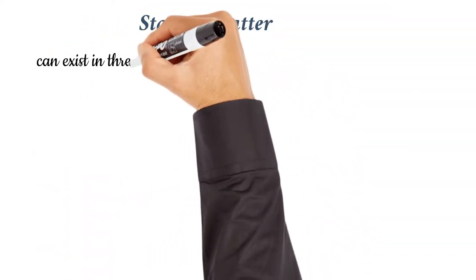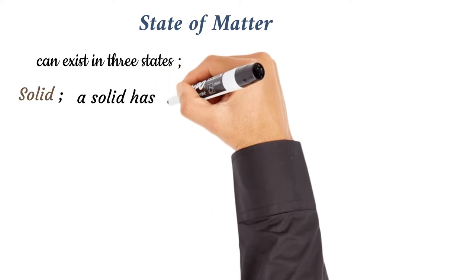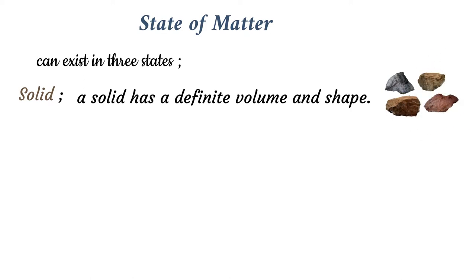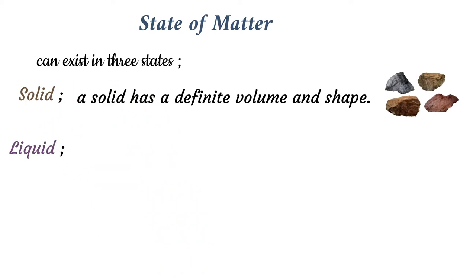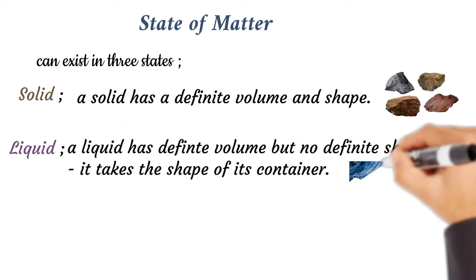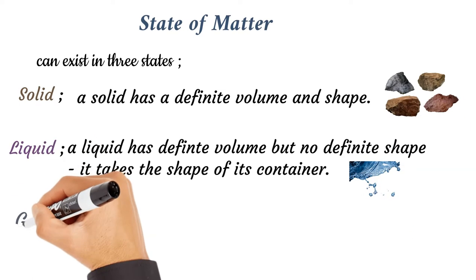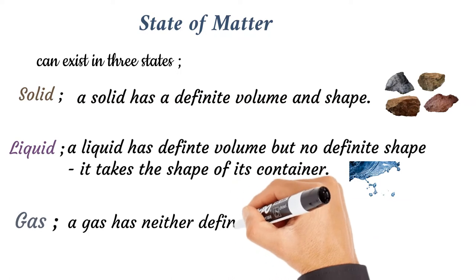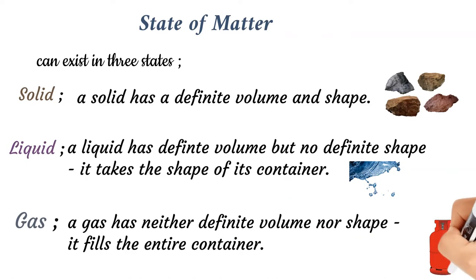States of matter: Matter can exist in three physical states. As a solid, it has a definite volume and shape. As a liquid, it has a definite volume but no definite shape—it takes the shape of its container. As a gas, matter has neither a definite volume nor a definite shape. It fills the entire container, for example in a gas cylinder.